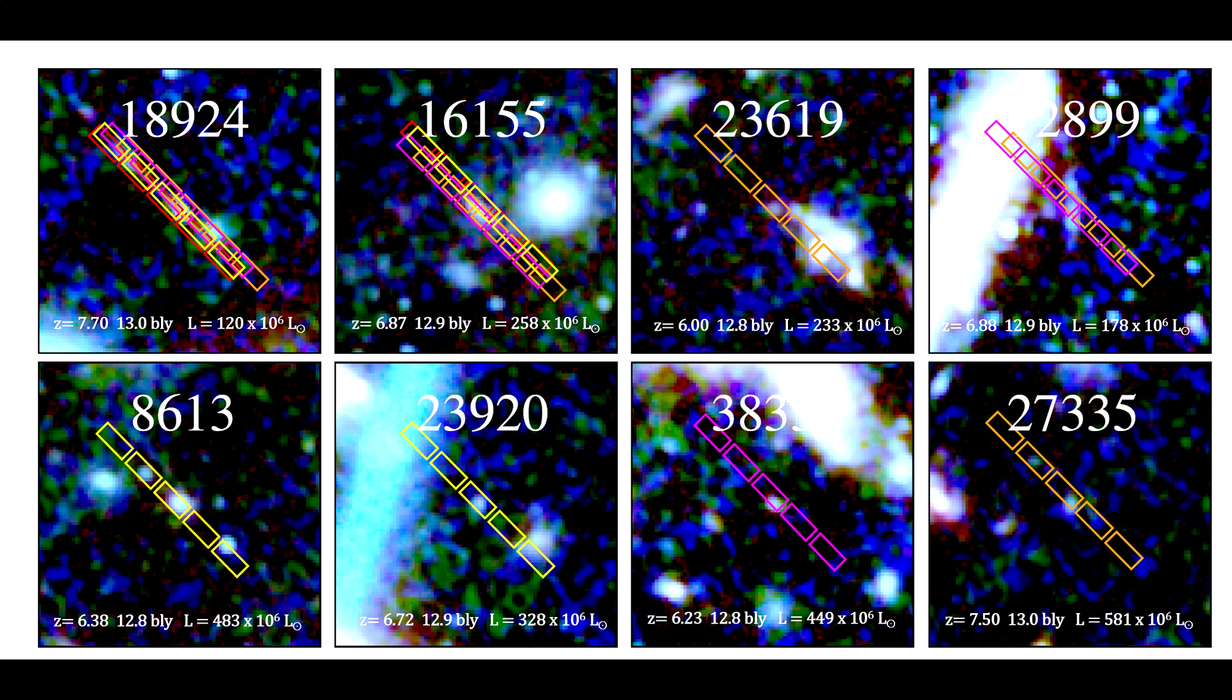Here's an image of each source dwarf galaxy and the positions of the near-infrared spectroscope's slit on top of each one. Lyman Alpha light from these early faint galaxies traveled 13 billion light-years to reach us. Their ultraviolet luminosity was measured and ranged from 120 to 581 million times greater than our sun's.